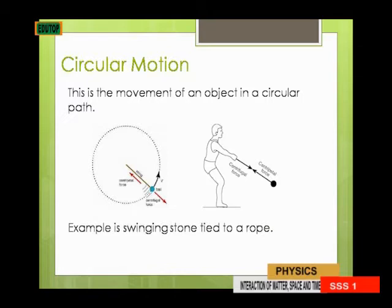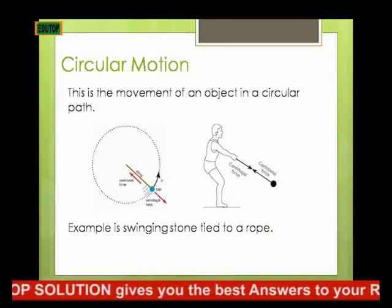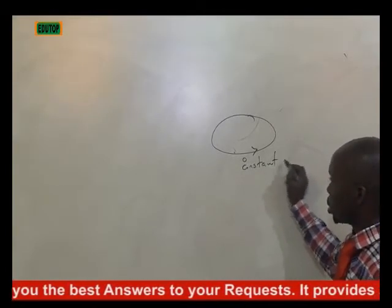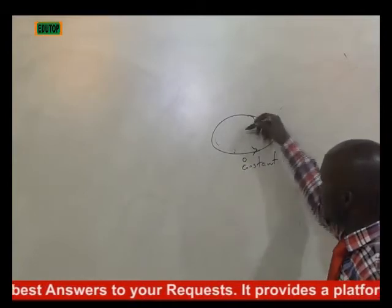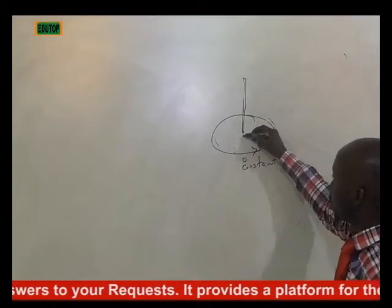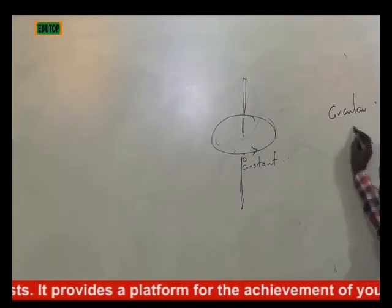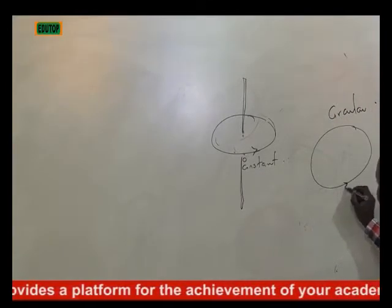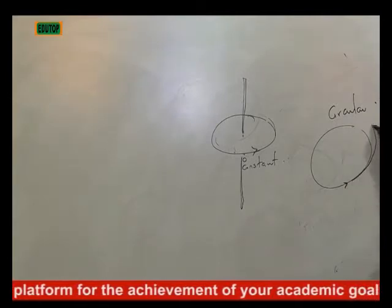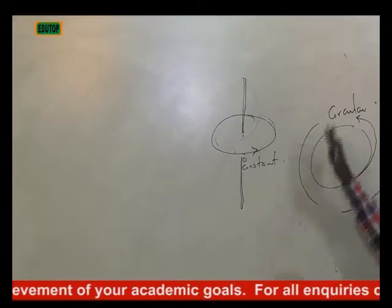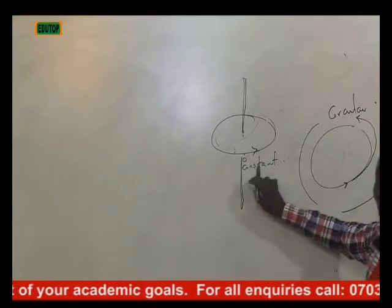For rotational, the direction of that particular body is constant — it's fixed. But for circular, the direction is not constant. It can start from here, it can leave that particular axis and come here or go another way. So this particular motion is circular, but not rotational.